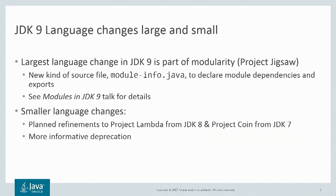First, however, we should mention that there was a very large language change made in JDK 9 as part of modularity — that is, Project Jigsaw. There's a new kind of source file, a module-info.java file that's used to declare dependencies between modules, as well as to declare what packages a module exports and other information like that. There's much more to be said about modules; I recommend you listen to the Modules in JDK 9 talk by my colleague Alex Buckley.